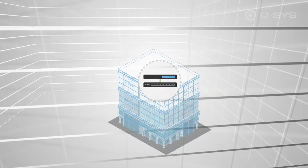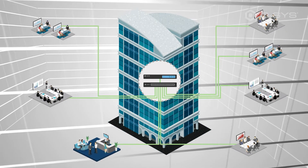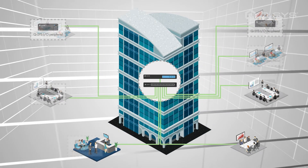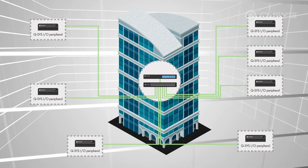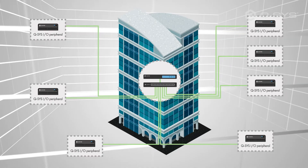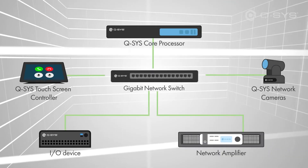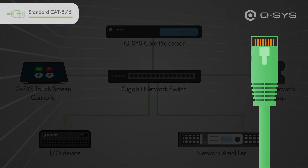For instance, a core could potentially service multiple rooms from a centralized location. When all the I/O is on the network, they're ready to be controlled and processed by a core that might be on the other side of the building. Across the board, most Q-SYS peripheral devices will connect to the core through a gigabit network switch via a standard network cable.